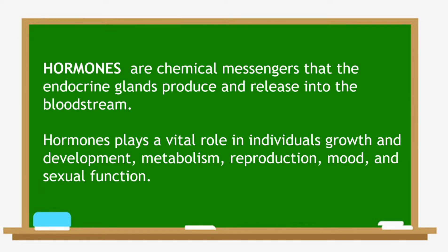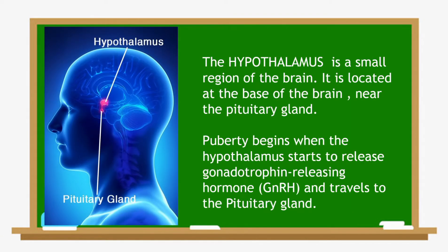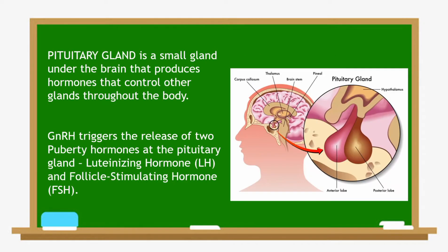Puberty and the reproductive system are controlled by the hormones of the hypothalamus. The hypothalamus is a small region of the brain located at the base of the brain near the pituitary gland. Puberty begins when the hypothalamus starts to release gonadotropin-releasing hormone, which travels to the pituitary gland.